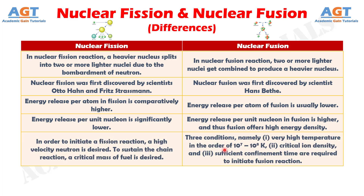Number five: in order to initiate a fission reaction, a high velocity neutron is desired. To sustain the chain reaction, a critical mass of fuel is desired. Whereas three conditions are required to initiate fusion: namely very high temperature in the order of 10 to the power of 7 to 10 to the power of 8 Kelvin, critical ion density, and sufficient confinement time.